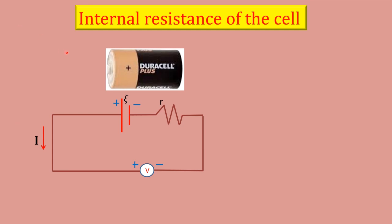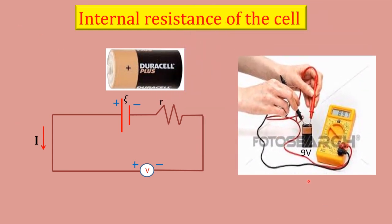A new 9 volt battery measures 8.97 volt. 0.03 volt is the voltage drop due to internal resistance within the cell. What is this internal resistance?